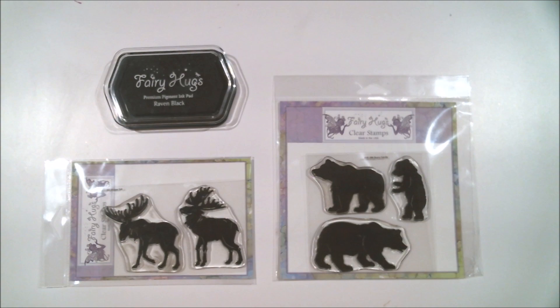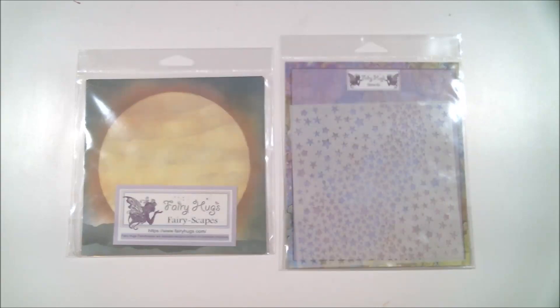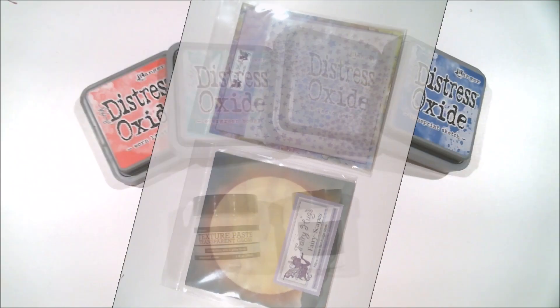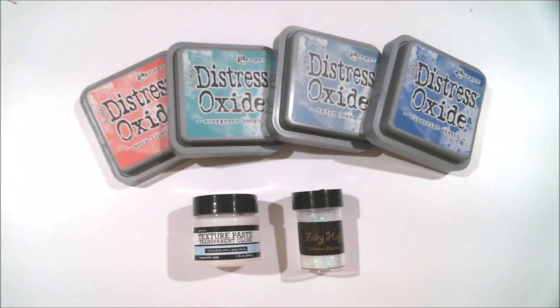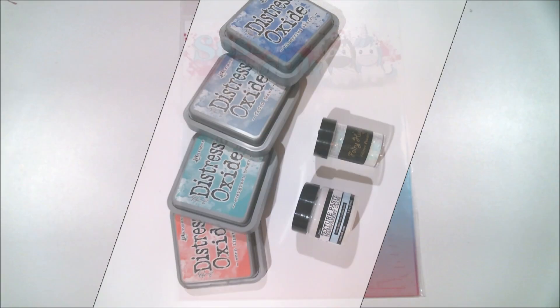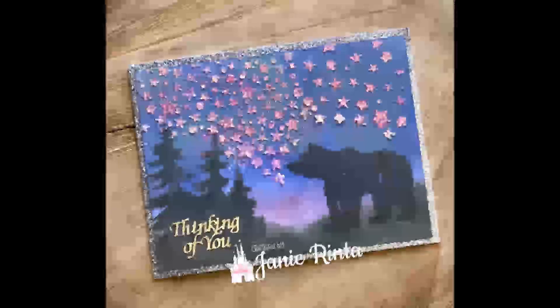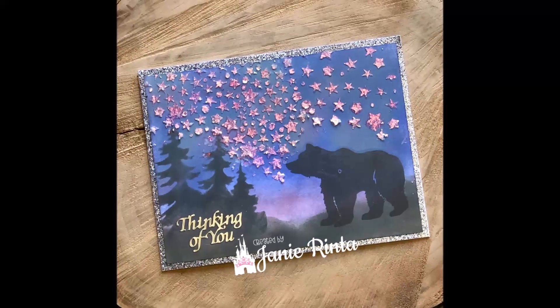For the first card I'm going to be using the Bear Family stamp set along with the Fairy Hugs Premium Pigment Ink Pad in Raven Black. I will also be using Fairy Hugs Fairy Scapes Full Moon background and their Galaxy stencil. I will be using Fairy Hugs Pixie Dust Confetti Glitter along with Ranger Texture Paste Transparent Gloss and some Distress Oxide inks, and this tree stencil from Sassy and Crafty.